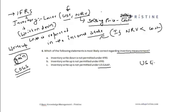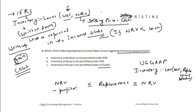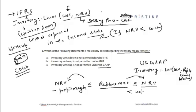Under US GAAP, inventory is reported as the lower of cost or replacement value. The replacement value can be anything between net realizable value minus the normal profit margin (the lower bound) and net realizable value (the upper bound).